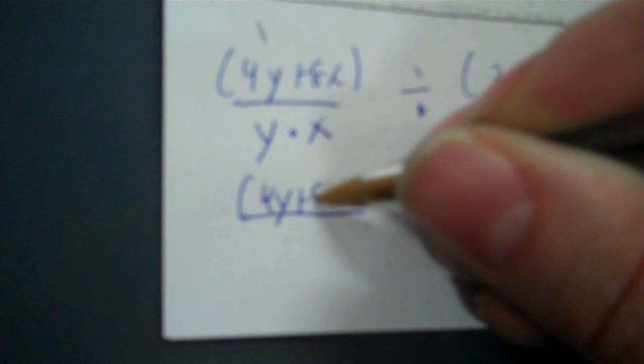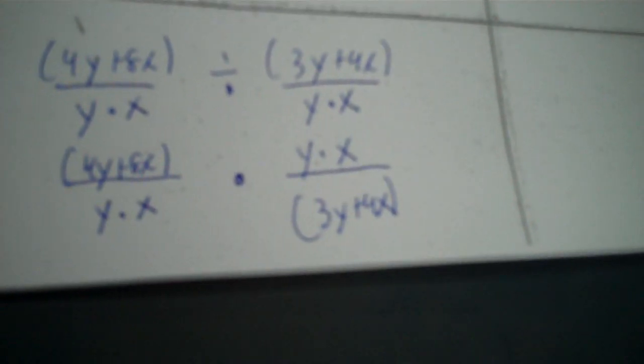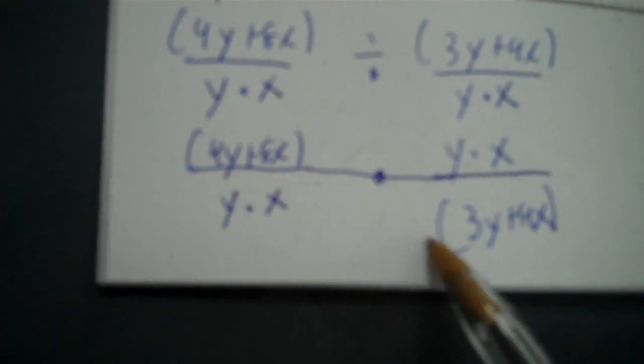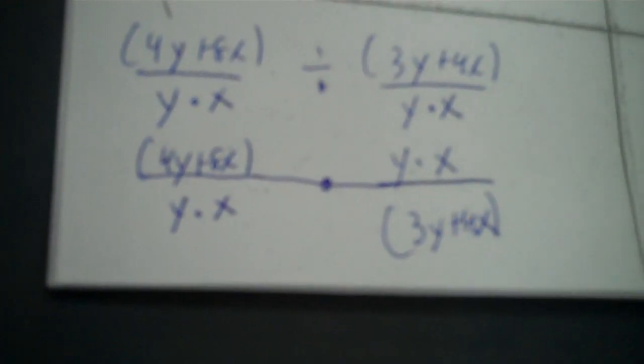So what you will be doing is making that a multiplication. Keep the first fraction as is — the quantity 4y plus 8x over y times x. When I say 'quantity,' that means it needs to be in parentheses. Then flip the second fraction to y times x over the quantity 3y plus 4x. The parentheses aren't going to cancel because 4y plus 8x and 3y plus 4x are not the same. They will both be in your final answer.